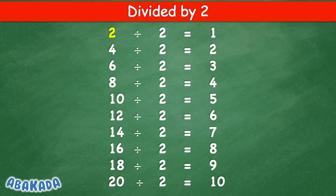Divided by 2: 2 divided by 2 equal 1, 4 divided by 2 equal 2, 6 divided by 2 equal 3, 8 divided by 2 equal 4, 10 divided by 2 equal 5, 12 divided by 2 equal 6, 14 divided by 2 equal 7, 16 divided by 2 equal 8, 18 divided by 2 equal 9, 20 divided by 2 equal 10.